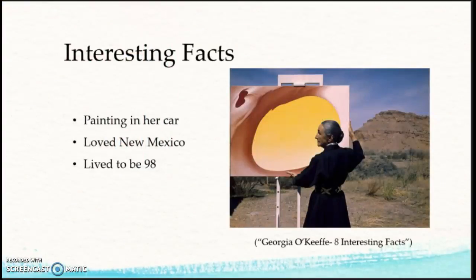Georgia O'Keeffe was a very interesting lady. One interesting fact is that she often painted in her car in New Mexico due to the bugs and harsh sun. She had a customized Model A Ford with detachable front seats so she could turn the passenger seat to face the back seat and prop up her canvas and paint. It is also interesting that she preferred the desert of New Mexico over the greenery of the eastern United States. It is also amazing that she lived to be 98 years old and continued to express herself with art her entire life.